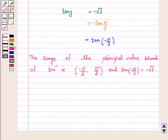Therefore, the principal value of tan inverse minus root 3 is minus pi by 3.